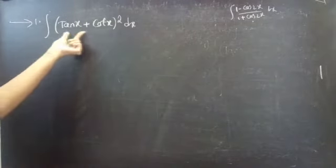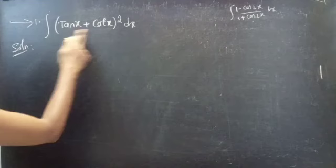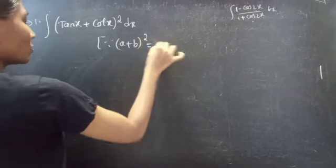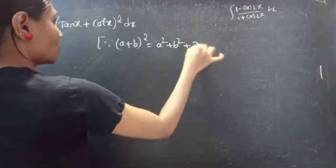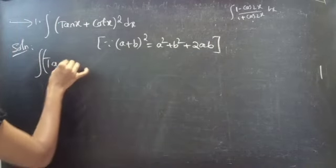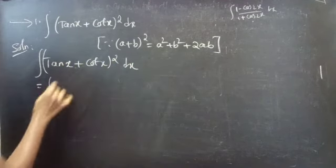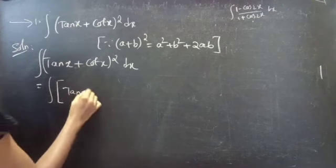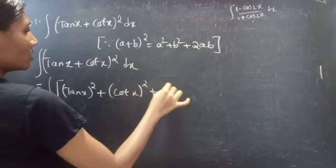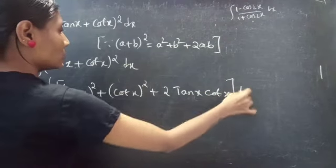We need to evaluate the integral of (tan x + cot x) whole square dx. This is of the form (a + b) whole square, and since we know that (a + b)² equals a² + b² + 2ab, we can write it as tan²x + cot²x + 2·tan x·cot x, all times dx.